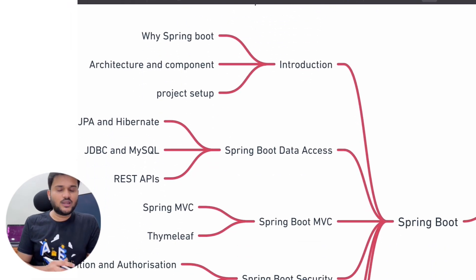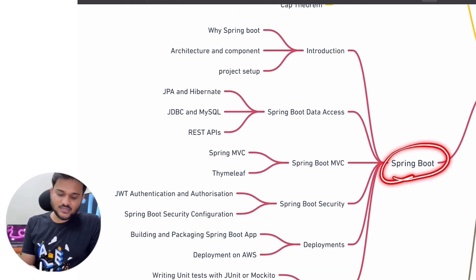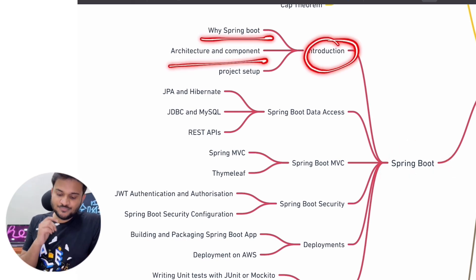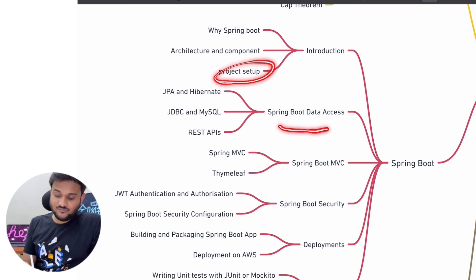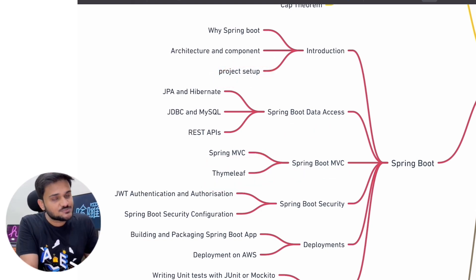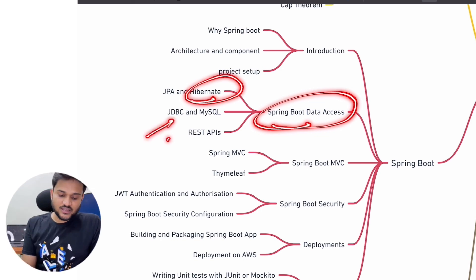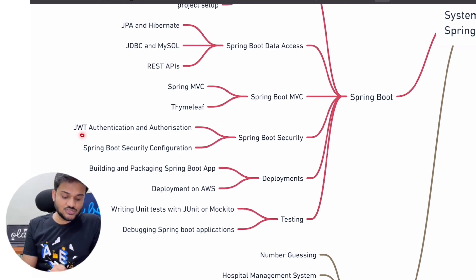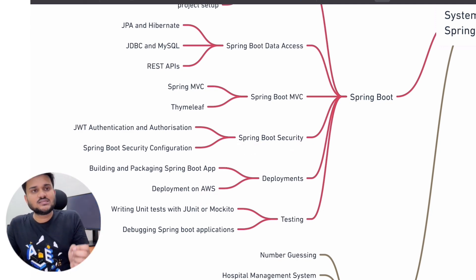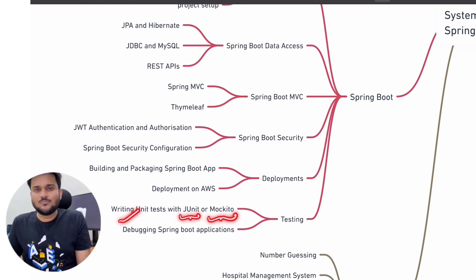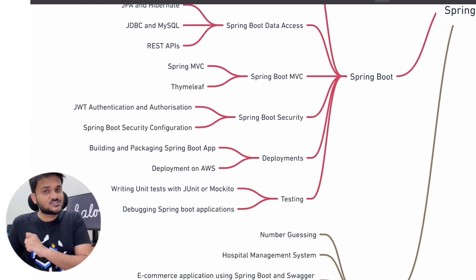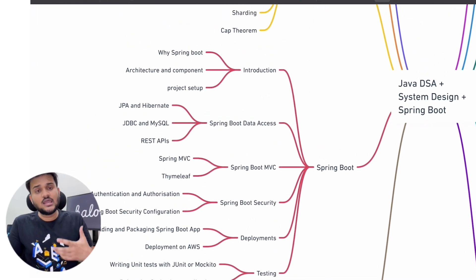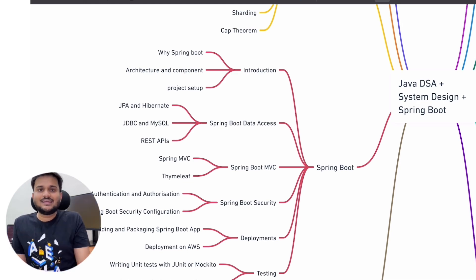Then the most awaited part: Spring Boot and back-end development with Spring Boot. We will talk about how to set up Spring Boot, its overall architecture, Spring MVC, and how you can connect your Spring Boot application with databases. We will see ORMs like Hibernate. We are also going to talk about authentication and authorization using JWT, deployment of Spring Boot applications on AWS, and unit testing using JUnit or Mockito — because no matter which company you join, you will be asked to write unit tests for every piece of code you write.